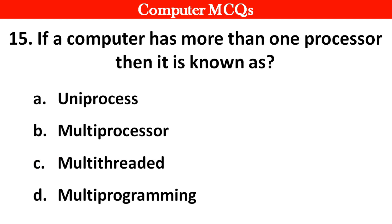Next question. If a computer has more than one processor, then it is known as — Options A: Uni-process, B: Multi-processor, C: Multi-threaded, D: Multi-programming. Right answer is option B: Multi-processor.